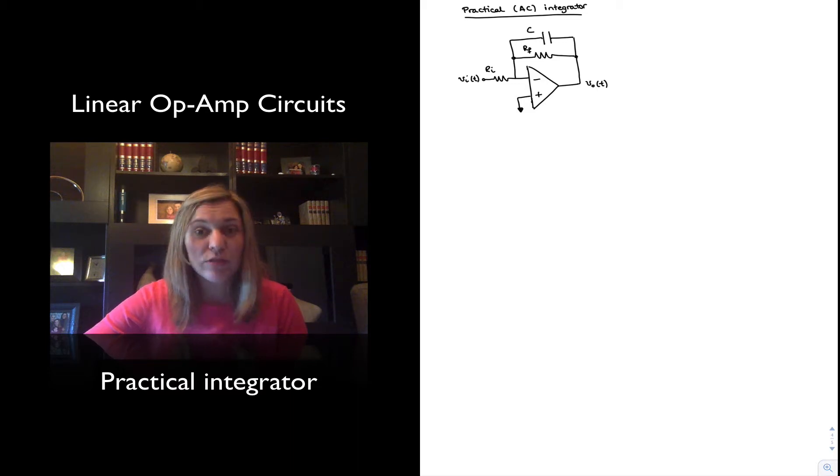The reason why the resistor was added is to overcome the limitation of the ideal integrator. If you recall, at low frequencies or even DC, the problem with the ideal integrator is that you have your capacitor in your feedback path, and at DC frequencies the capacitor will behave as an open circuit, and therefore your op-amp is operating in open loop configuration and it will saturate.